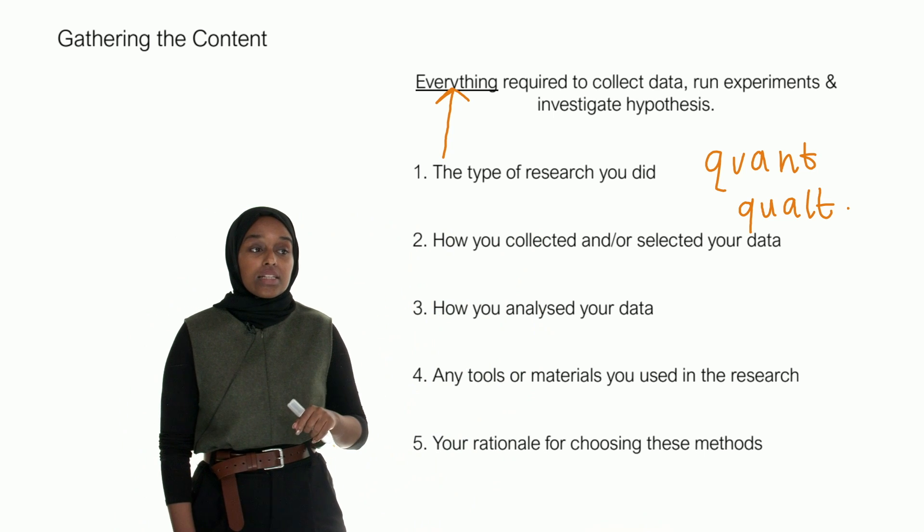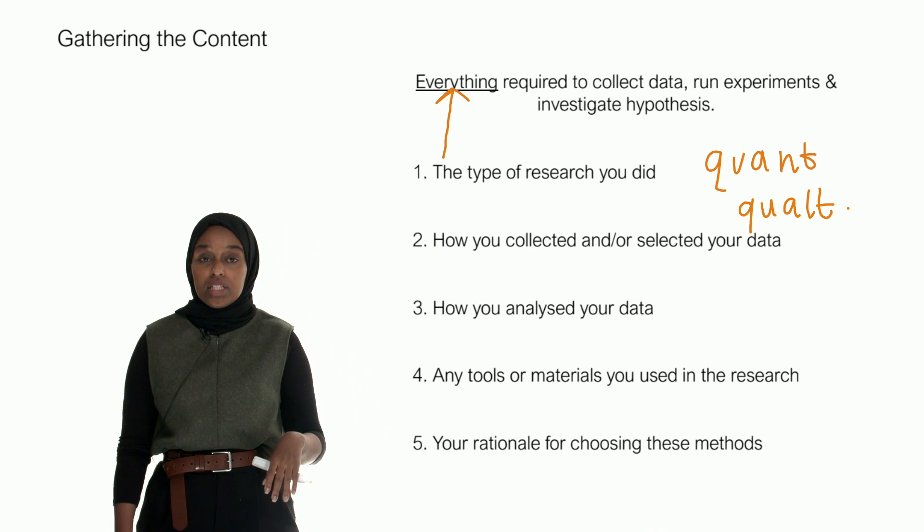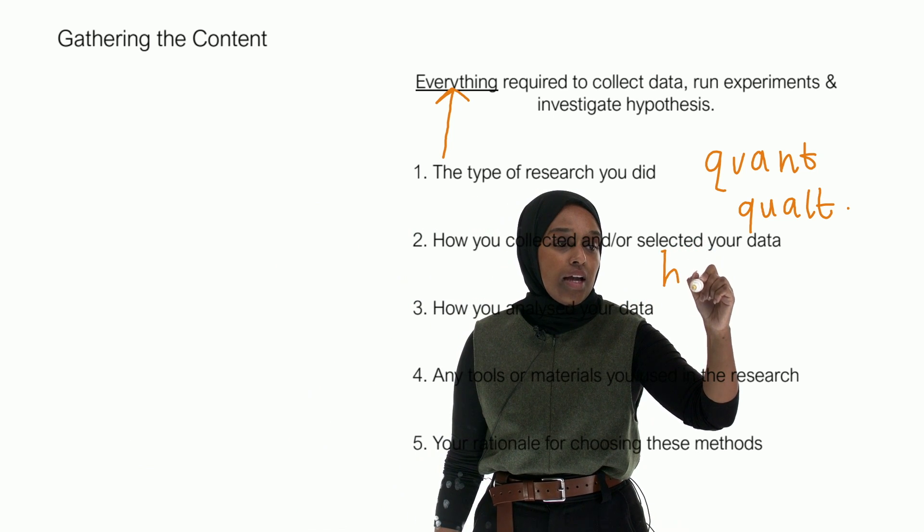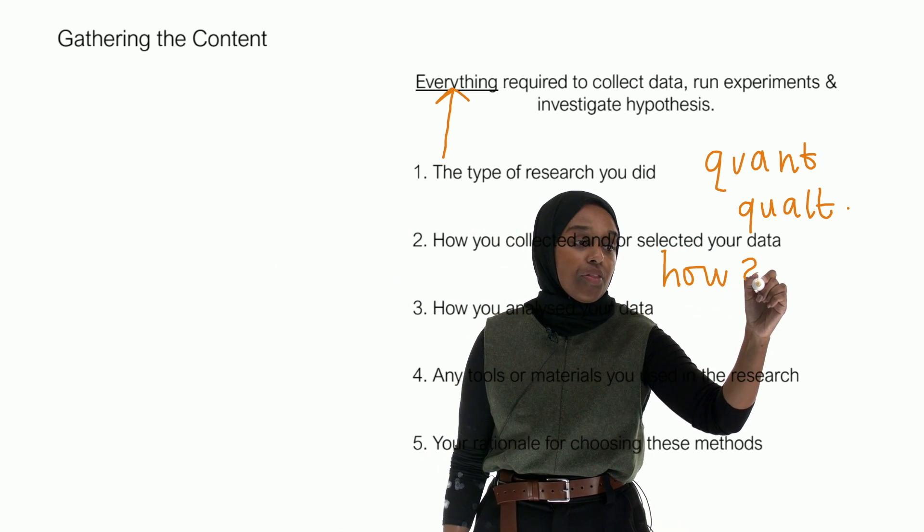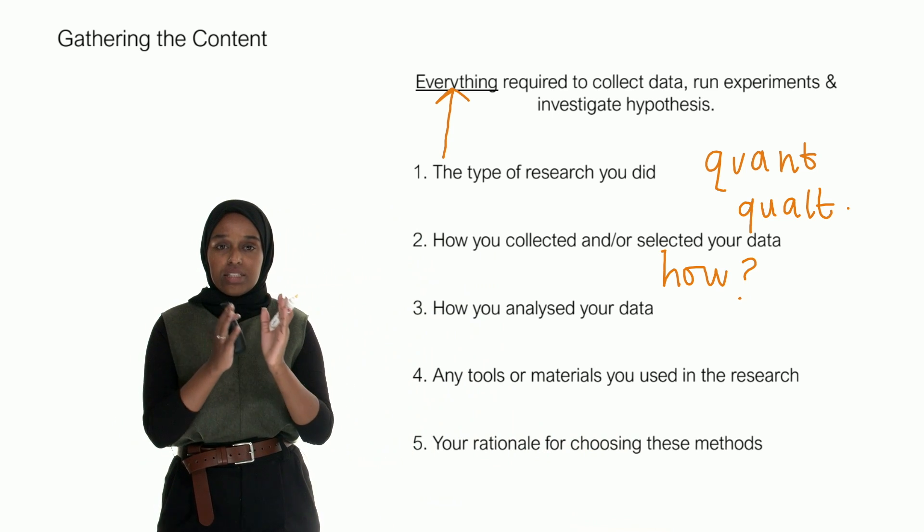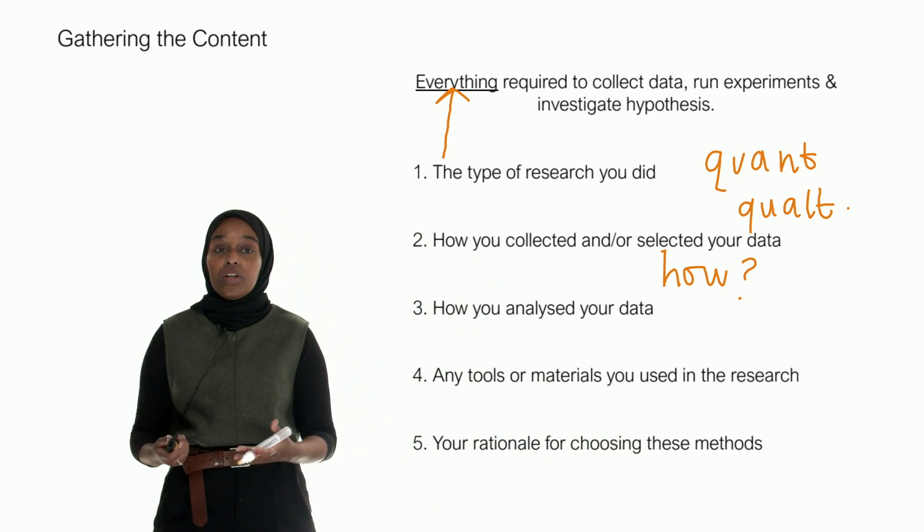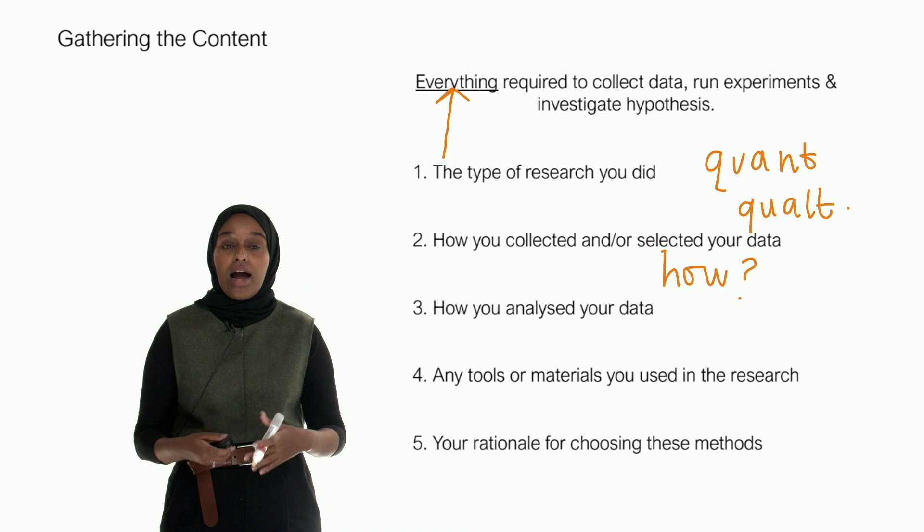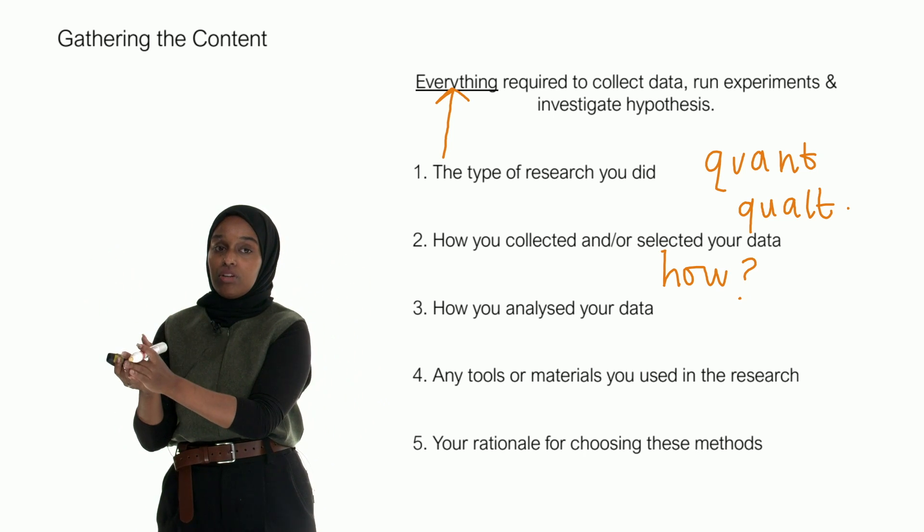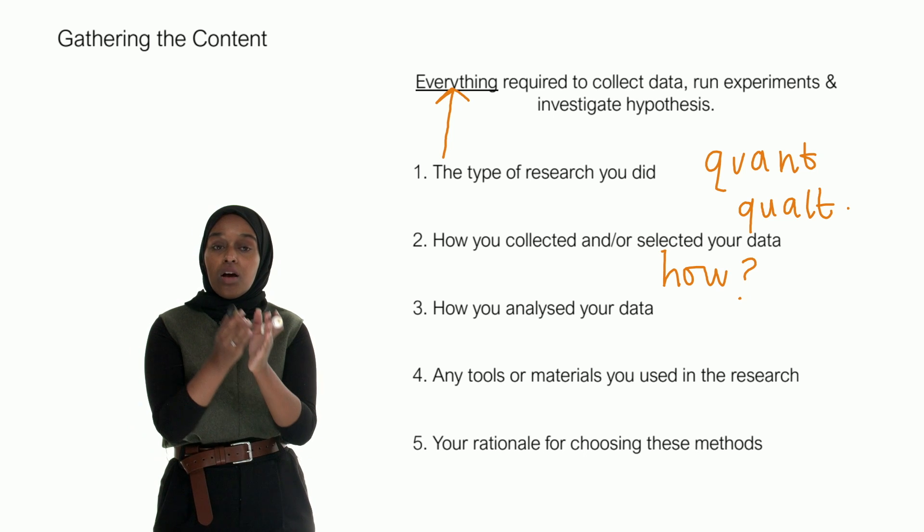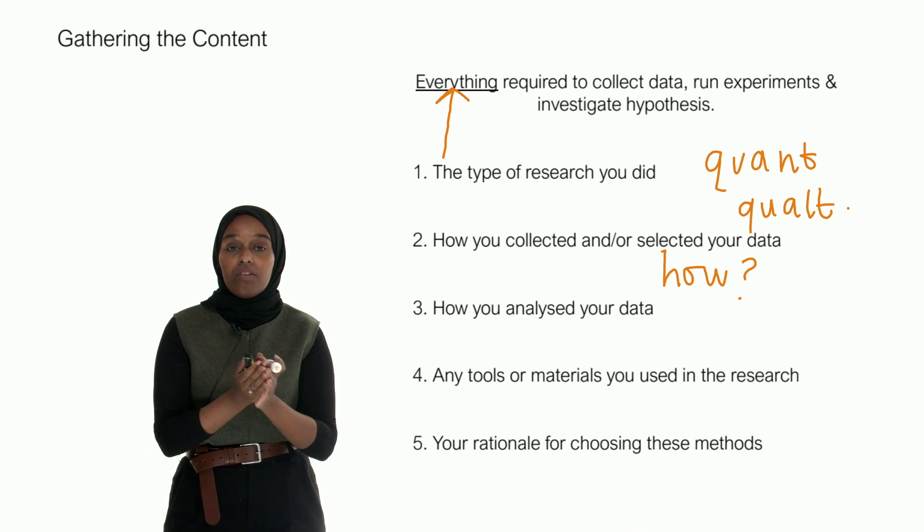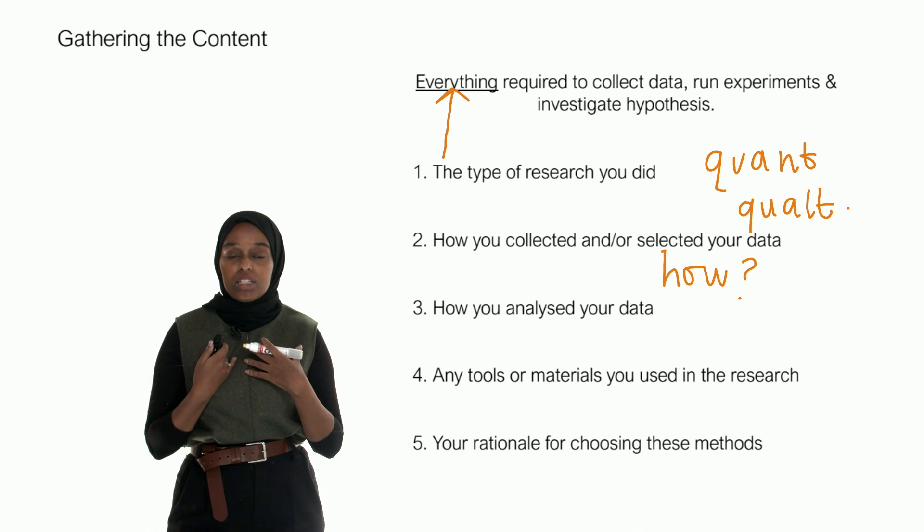How you collected or selected your data—what are your methods. The key word I would use is how: how did you exactly do it, what were the particular steps you took. If you're running a focus session, how did you recruit the participants, what was your inclusion criteria, what are the exclusion criteria, what are the ages, what were the genders, how long did you have, what did you do, what was your role as an interviewer. Every single detail needs to be there.